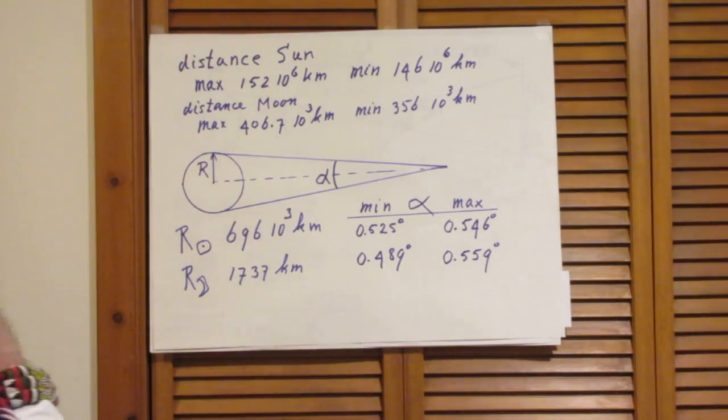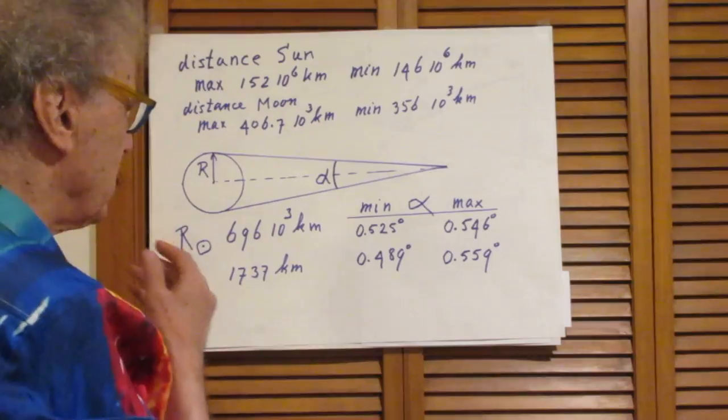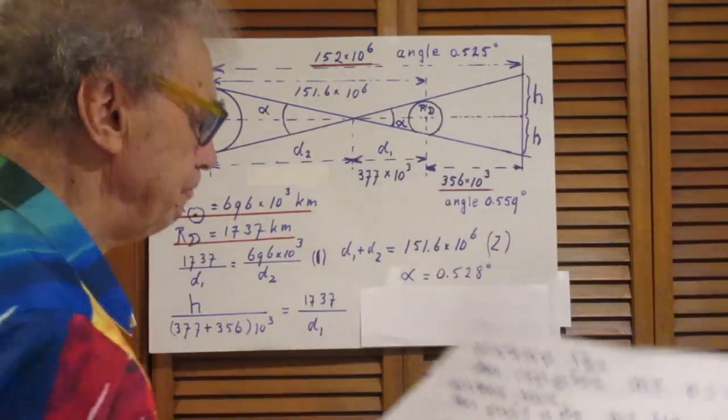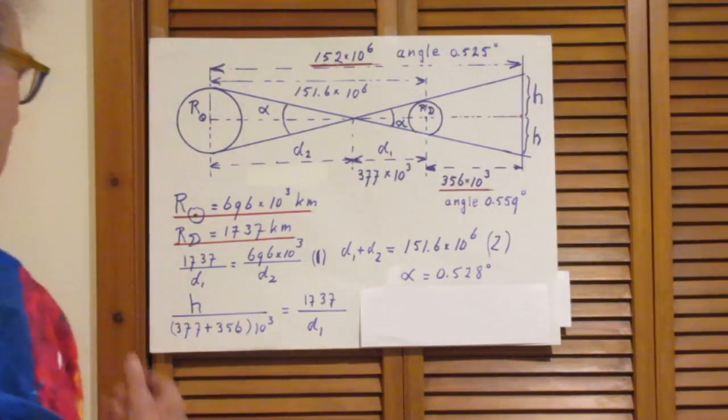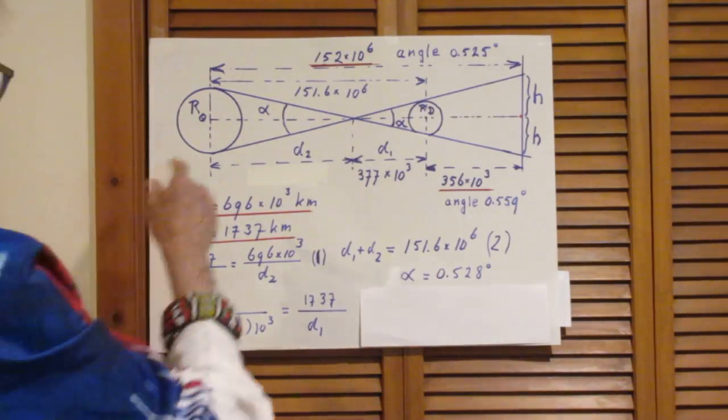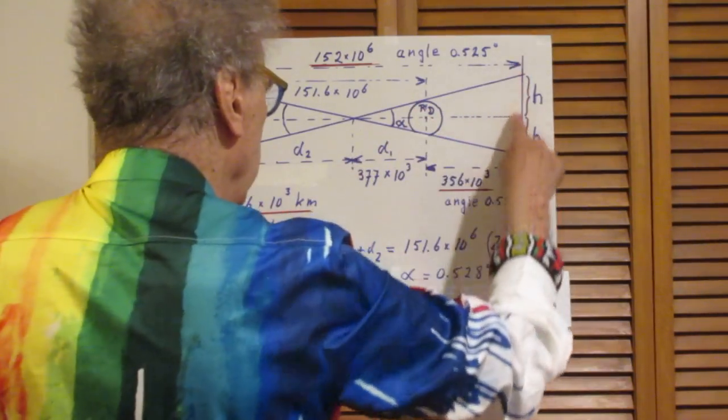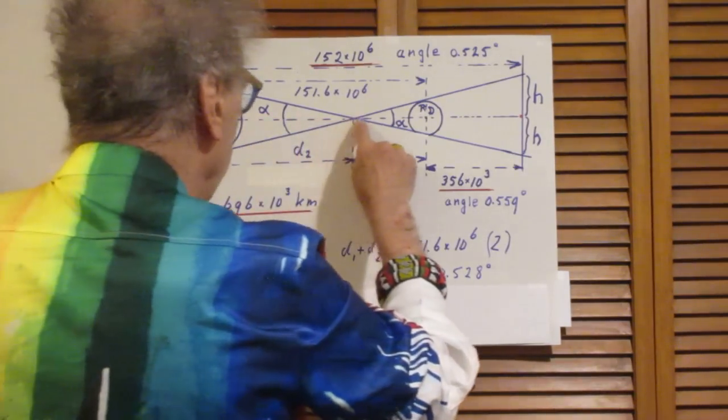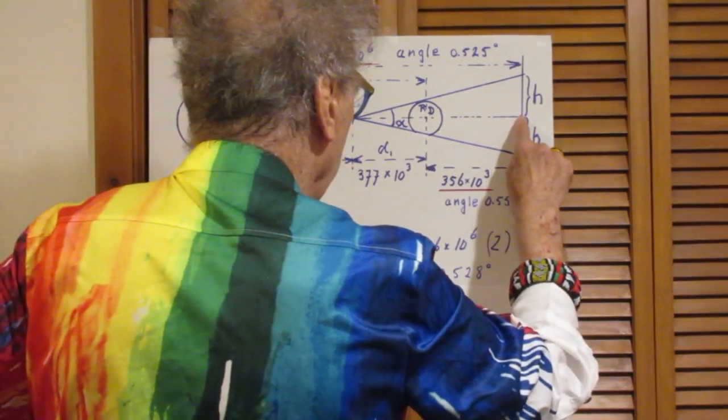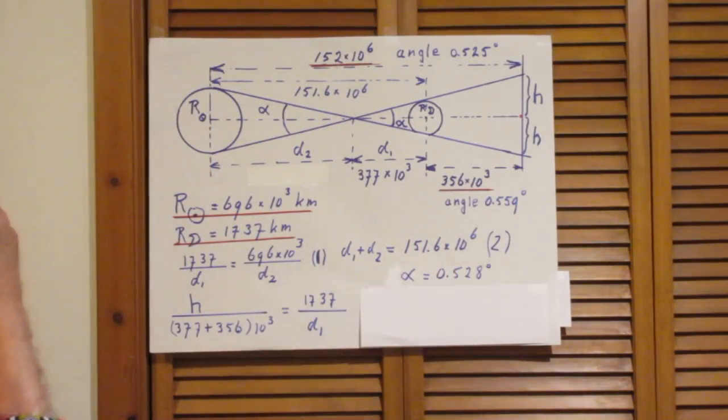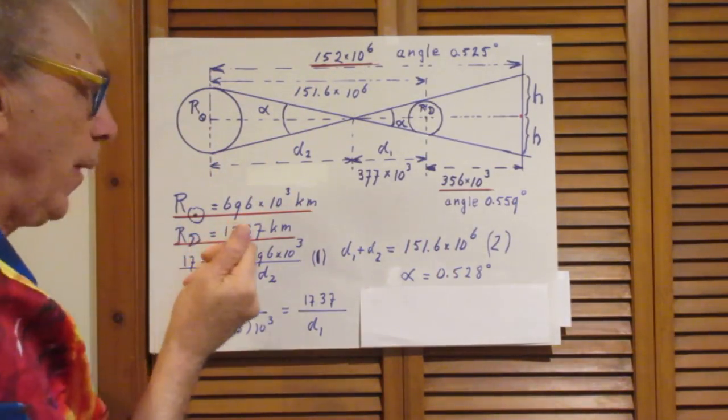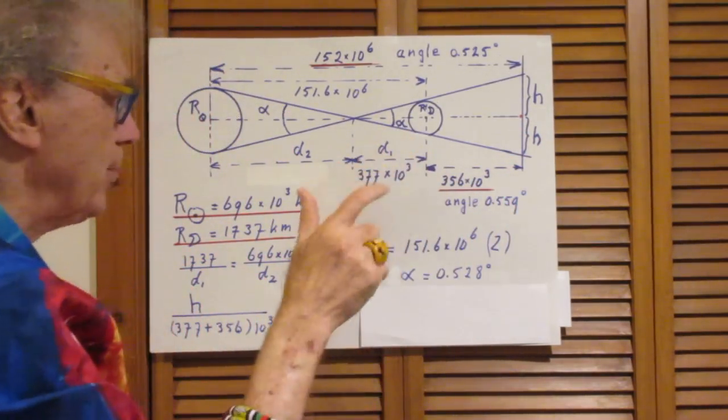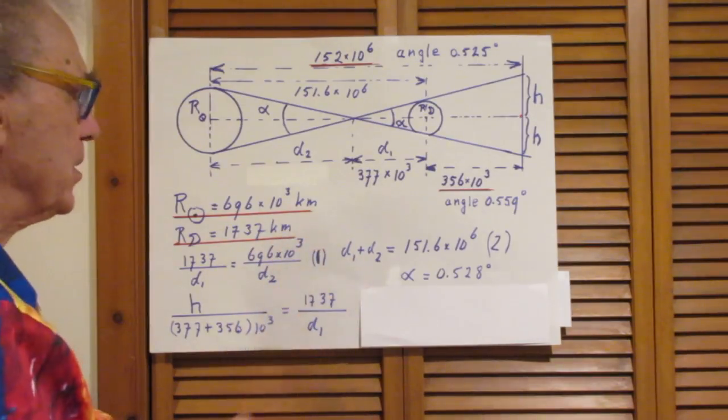So the question now is, what is the size of the penumbra on earth during a solar eclipse? Okay, look at this picture. Here is the sun, here is the moon and here is the earth. Right at the center of this line here on earth is the total solar eclipse. On August 21, that was an area with a diameter of about 100 kilometers. It is extremely small.